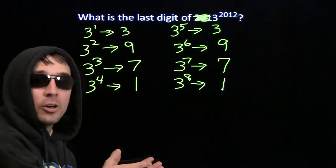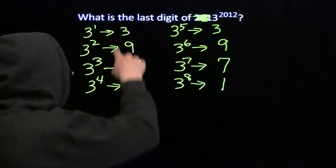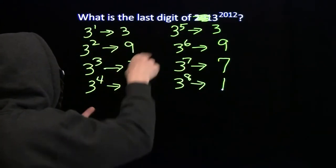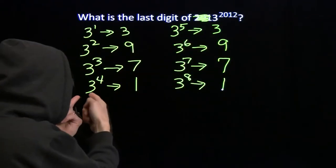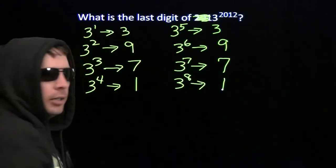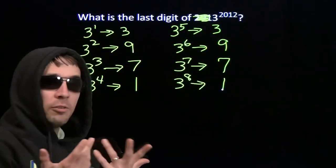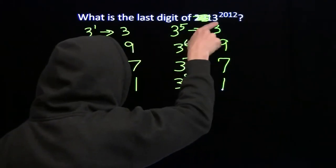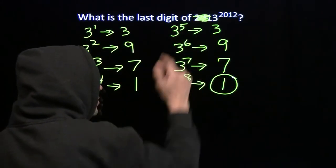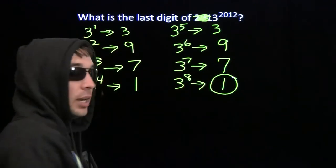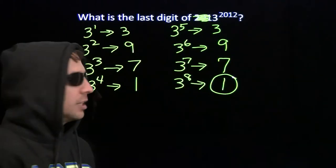The last digits of the powers of 3 go in cycles of 4: 3, 9, 7, 1, 3, 9, 7, 1. So if you raise 3 to any multiple of 4, you get a number that ends in 1. 3 to the 2012 — 2012 is a multiple of 4, so the last digit of 3 to the 2012 is 1. That means the last digit of 2013 to the 2012 is 1. We used our key strategy there — do something stupid.